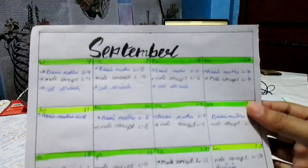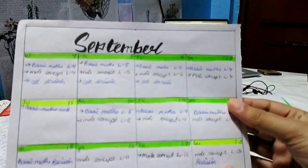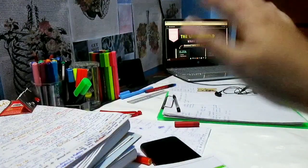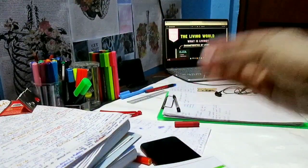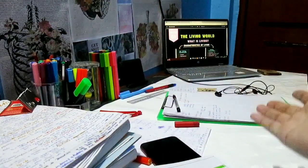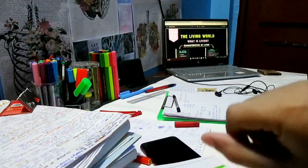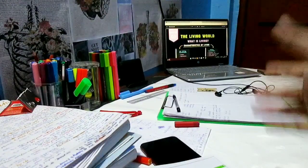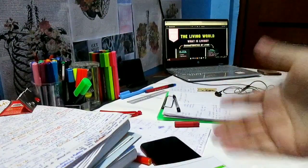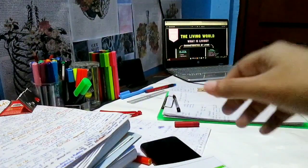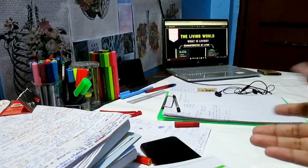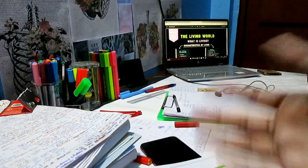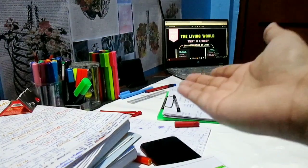I'm covering basic math and mold concept and I was planning to cover it till the 18th of September. On the 19th, I am starting a fresh start with the Yakin 3.0 batch. Right now, due to covering my backlogs, I won't be able to focus more on biology and physics and chemistry, so I'm starting with Chapter 1 of Class 11th. Let's see how many chapters I can do today — let's get started.